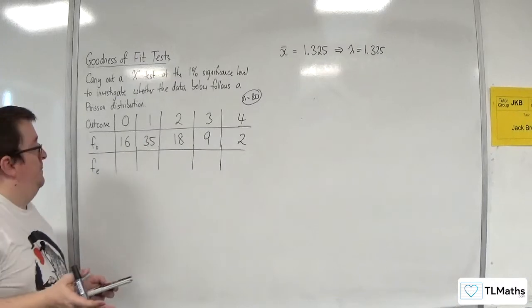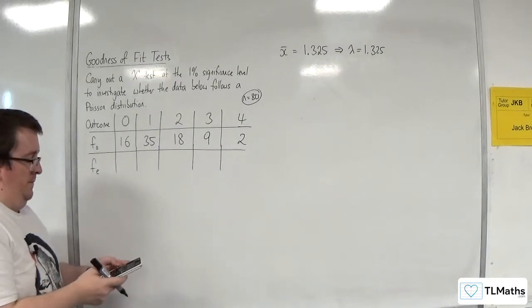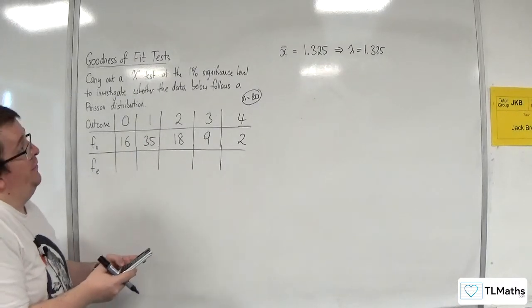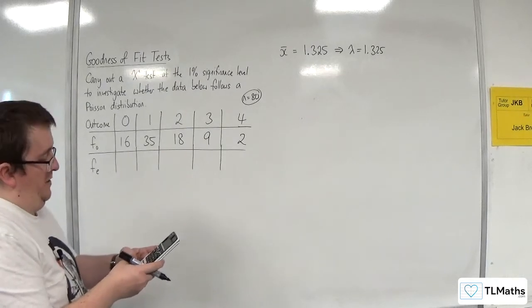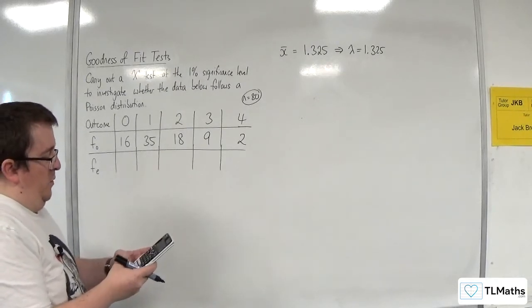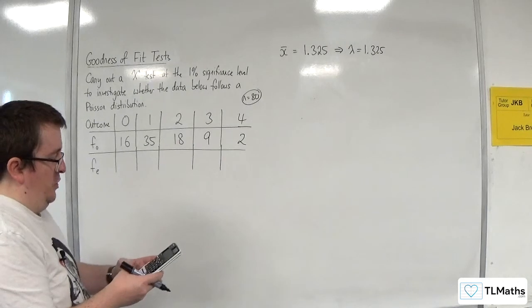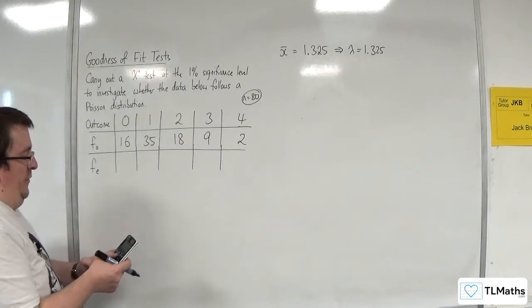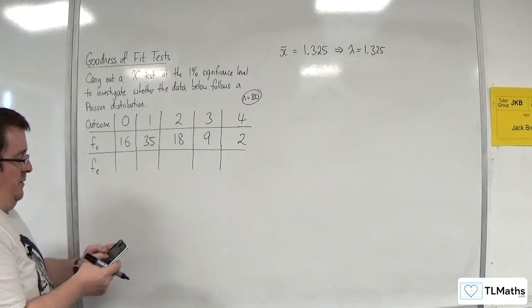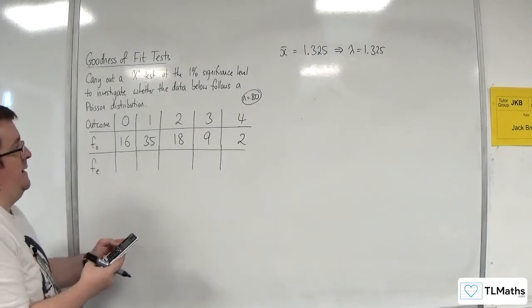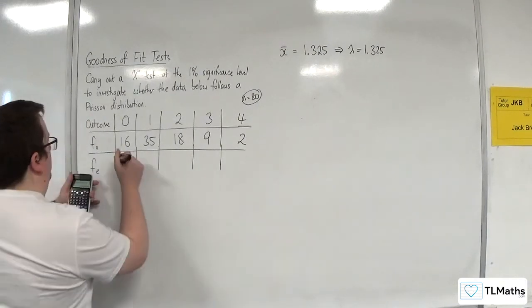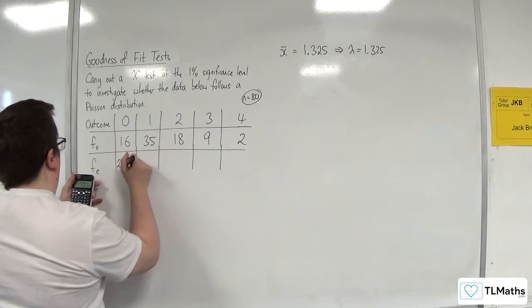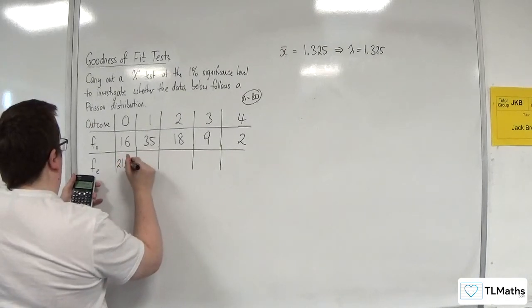So I'm going to use the formula for the distribution. I'm going to have e to the minus lambda, so minus 1.325, times by 1.325 to the power of 0 over 0 factorial, and I'm going to multiply that by 80. And we get 21.2642.